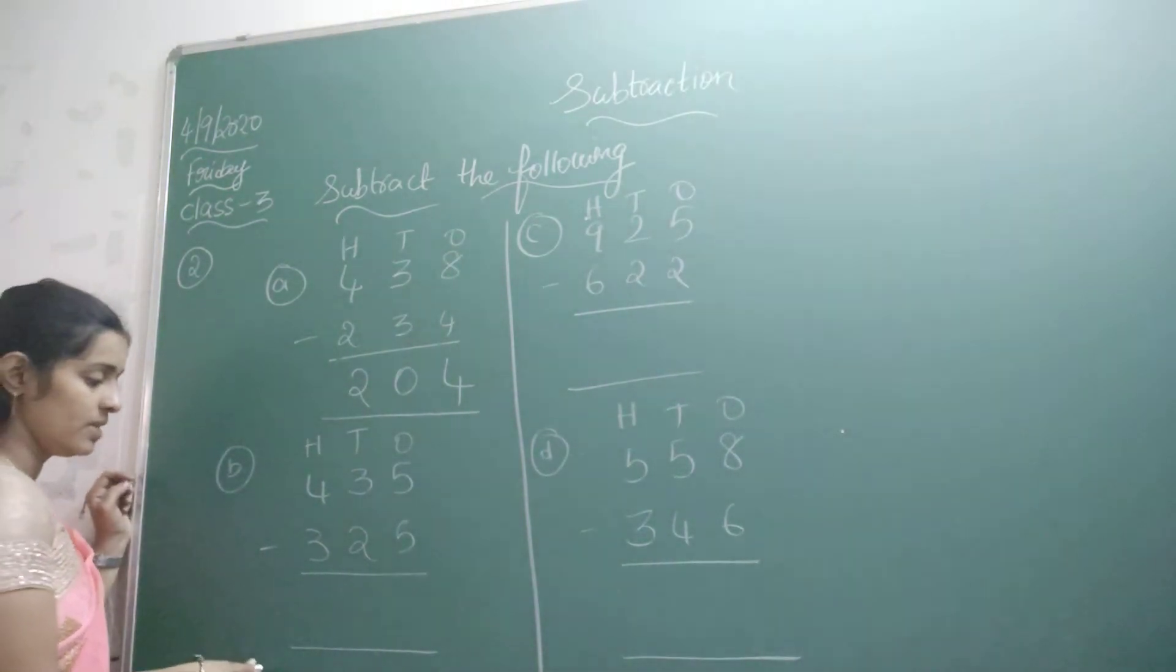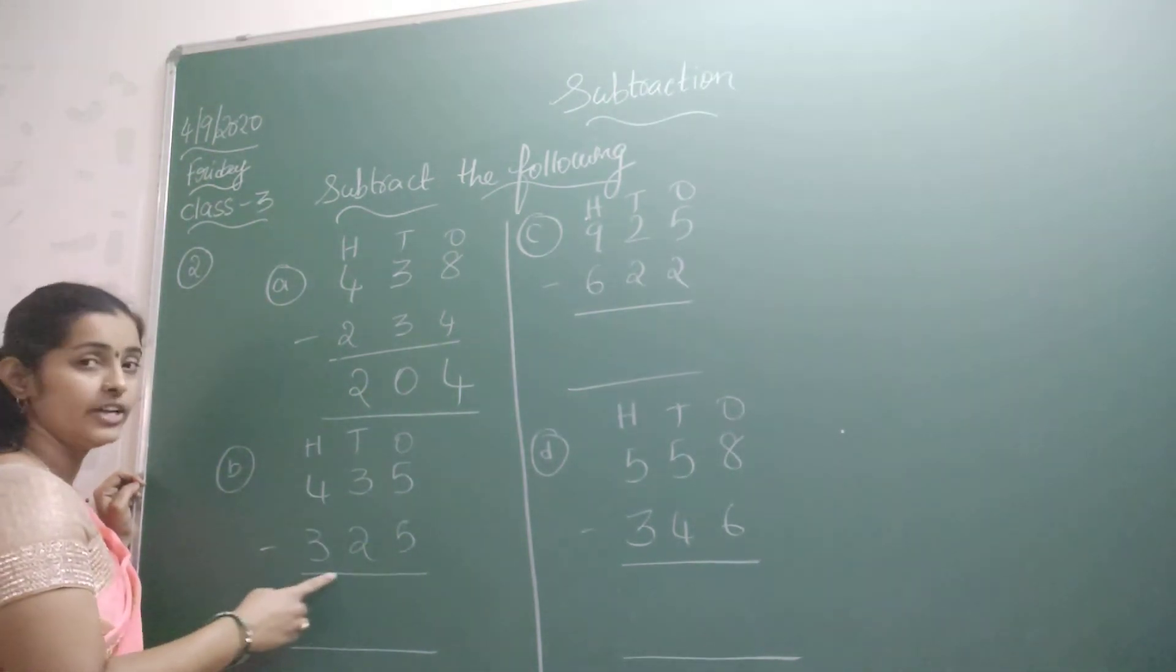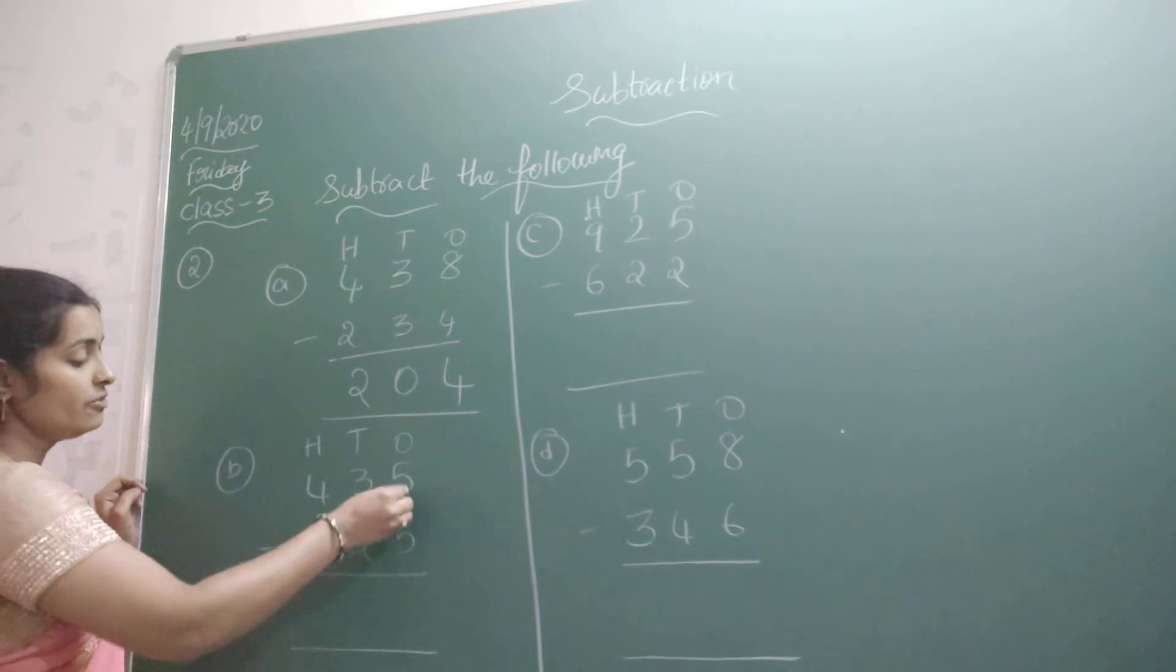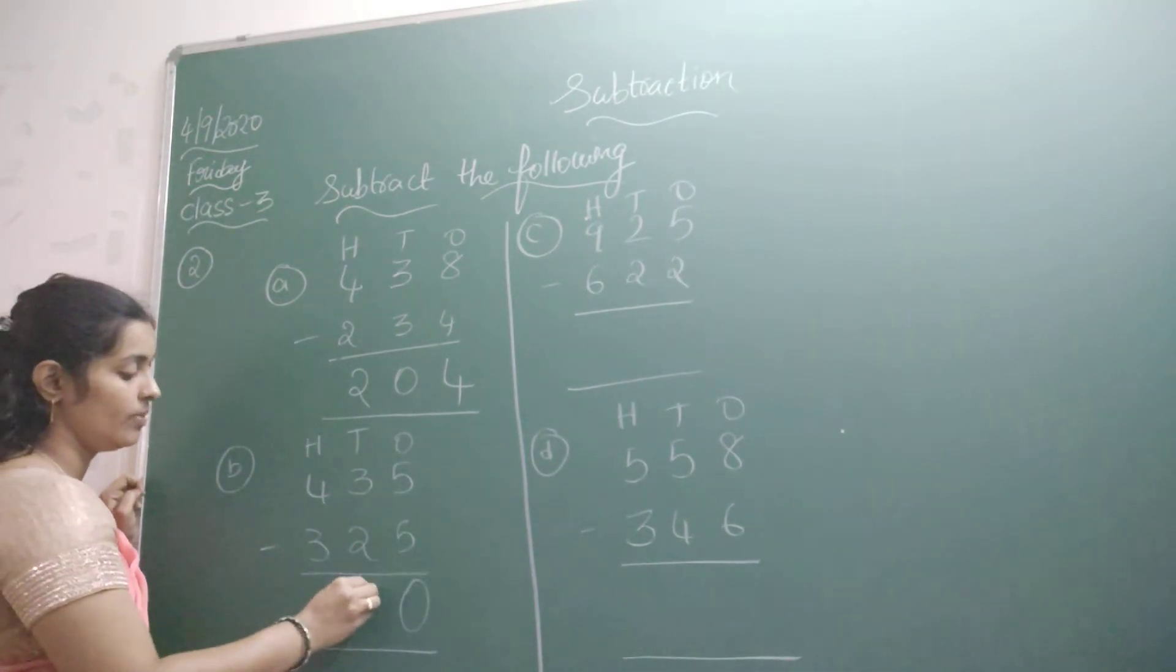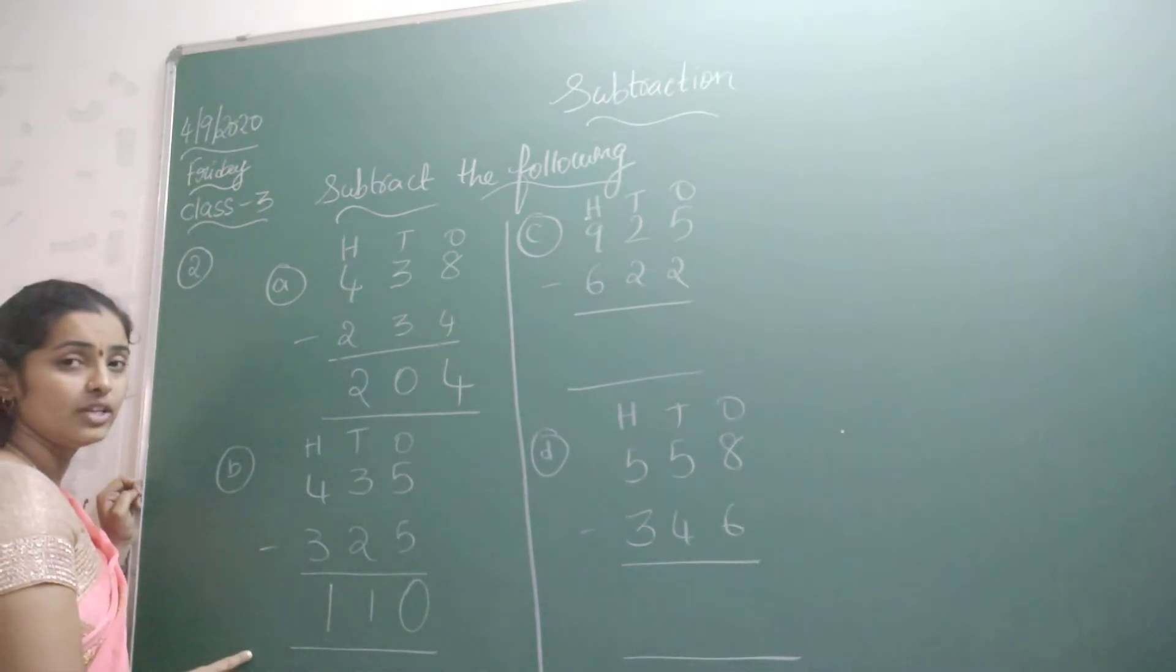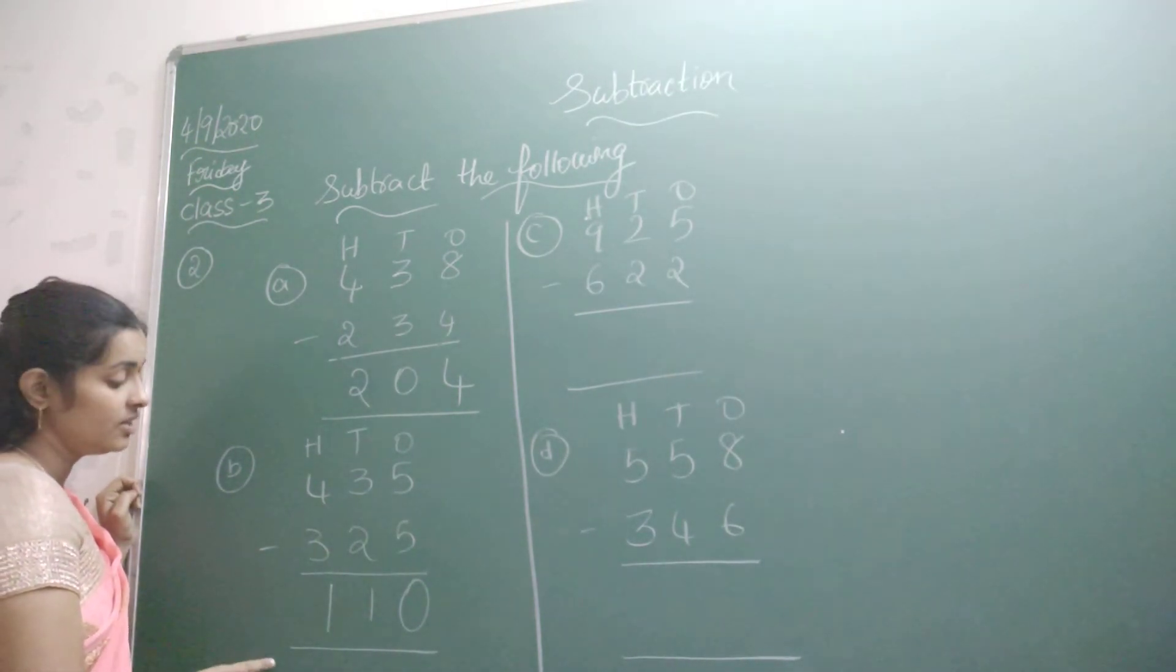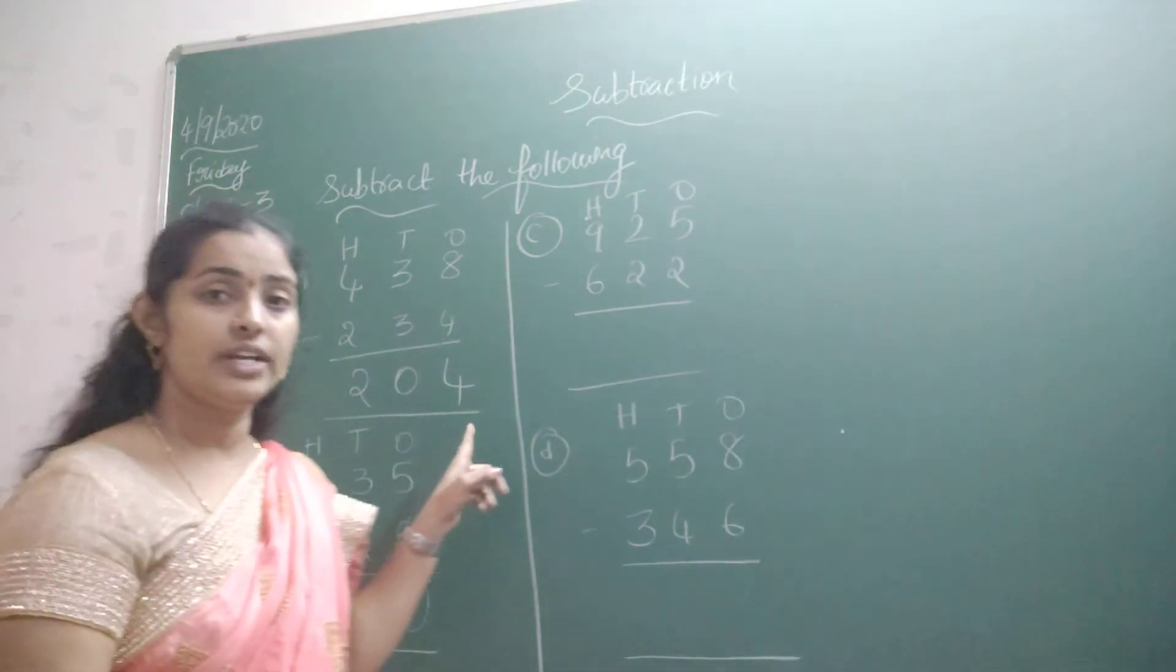Now come to the next one, the second problem. 435 minus 325. So what do I get here? 5 minus 5 is how much? 0. 3 minus 2 is how much? 1. 4 minus 3 is how much? 1. So what answer did you get here? The required answer is 110. Now come to the next one.